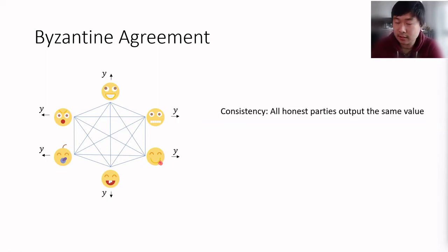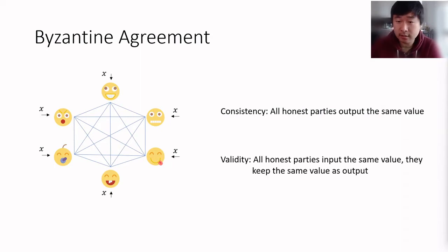The first guarantee is called consistency, meaning that all the honest parties output the same value, and the second guarantee is validity, meaning that if all honest parties have the same value as input X, then this should be the value that they output.